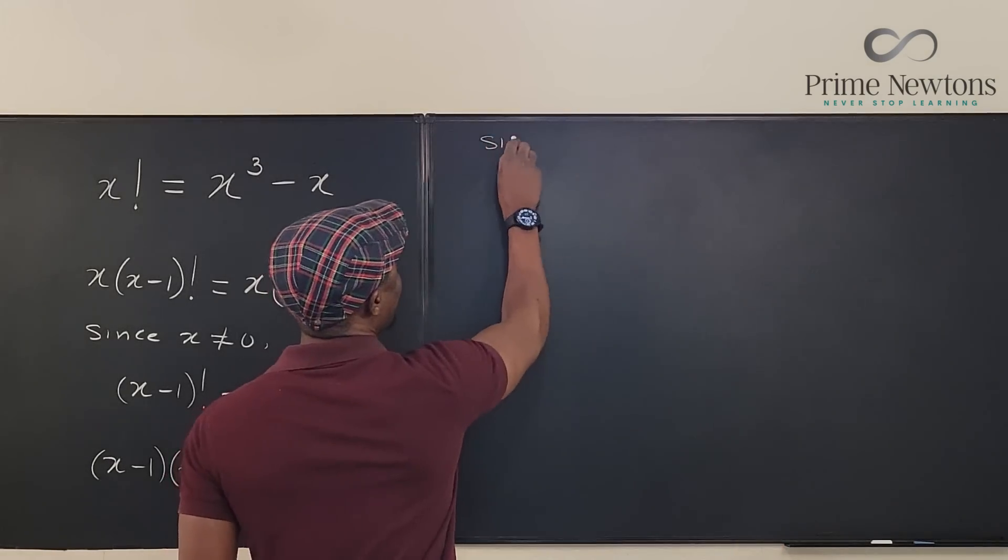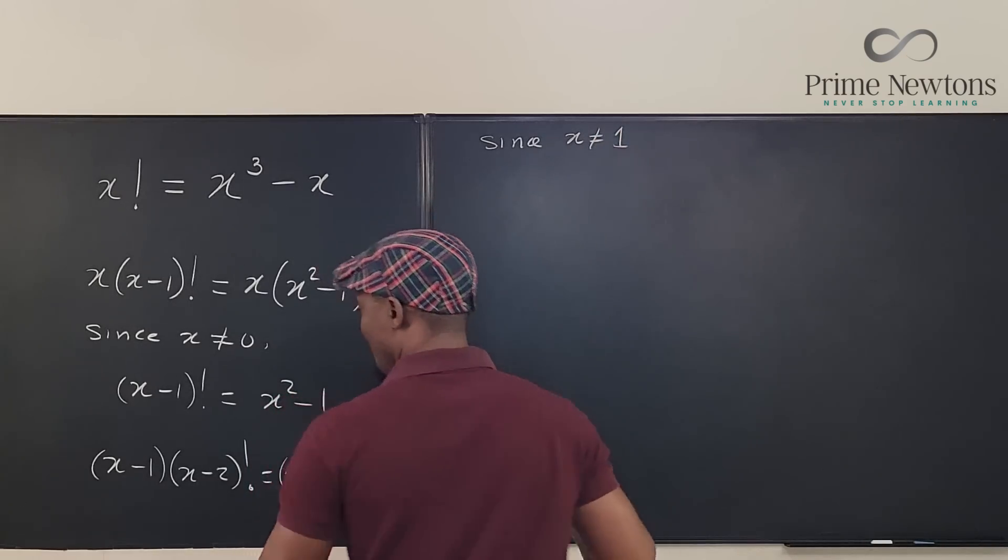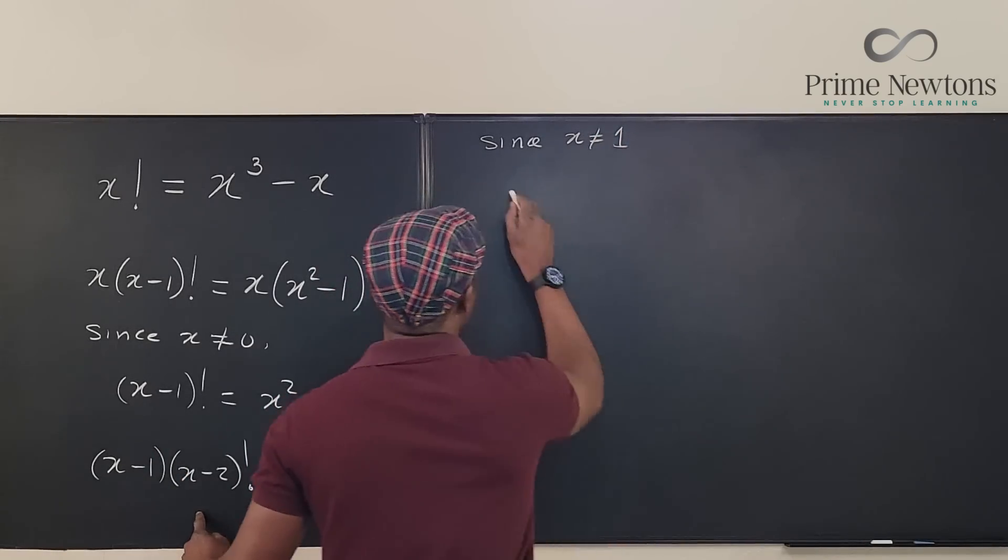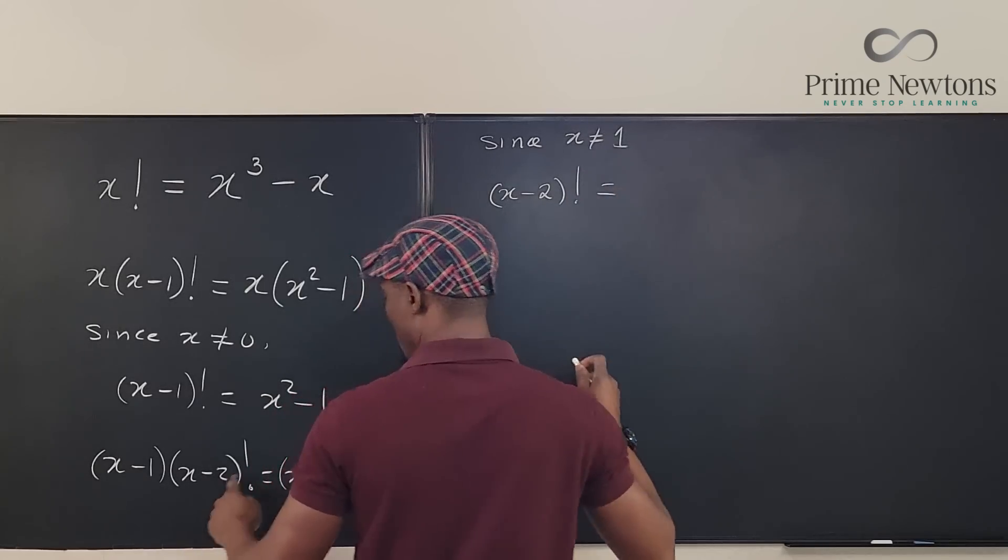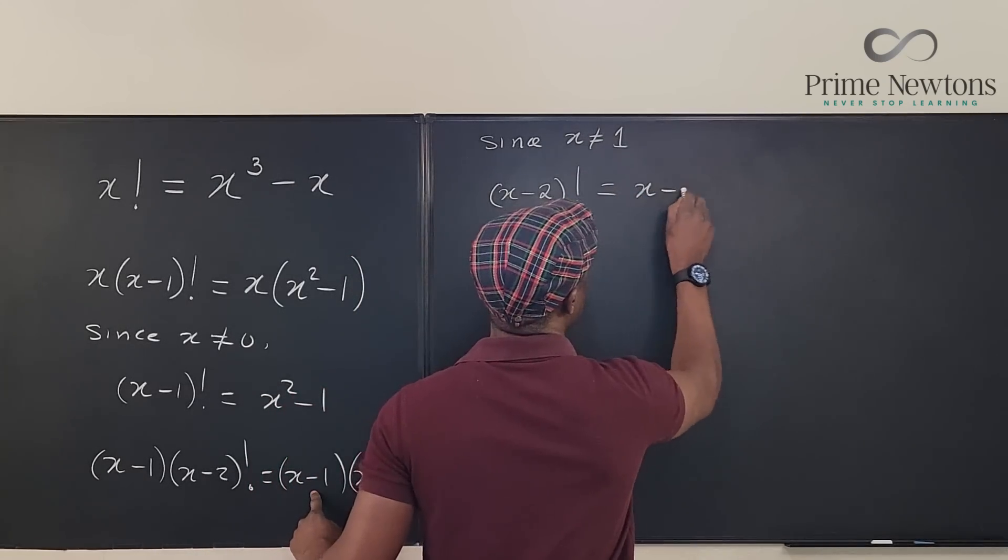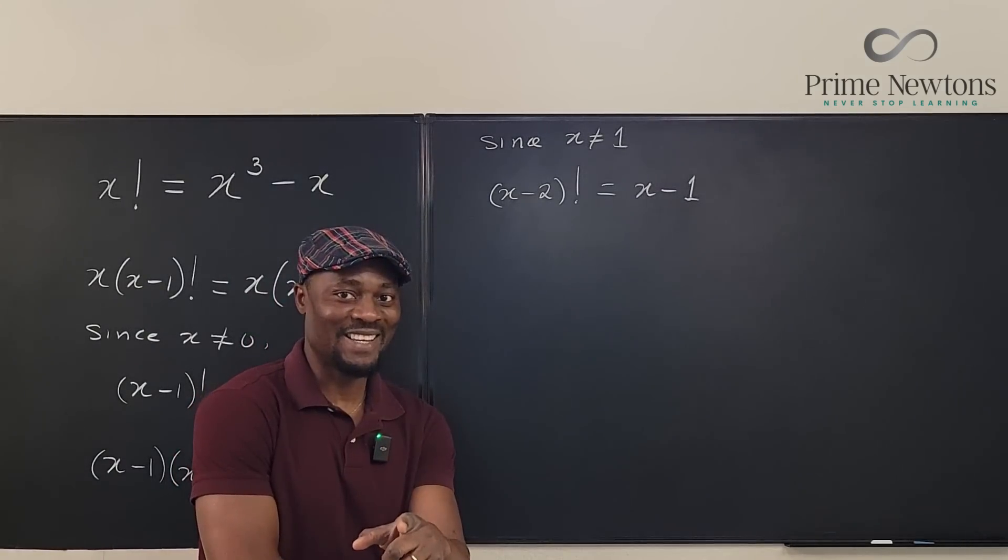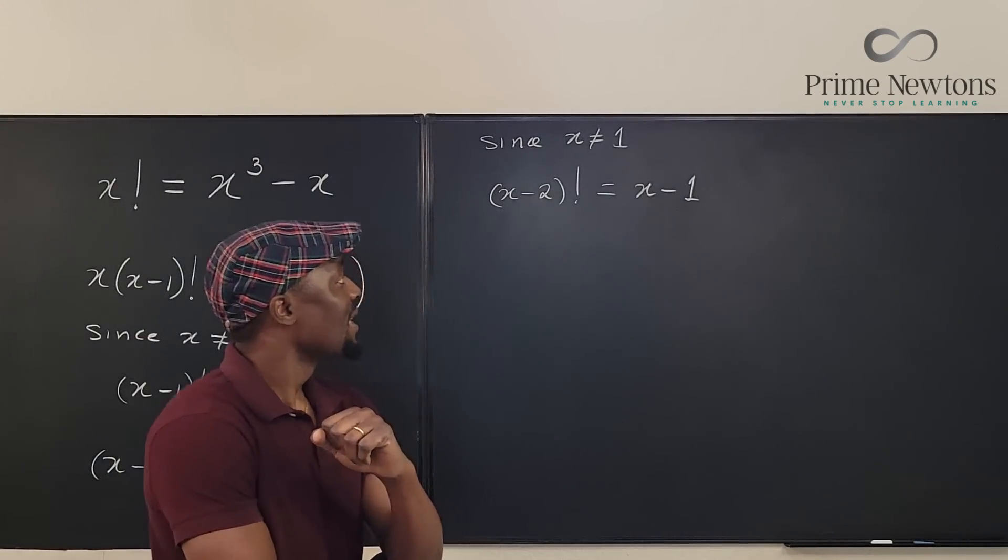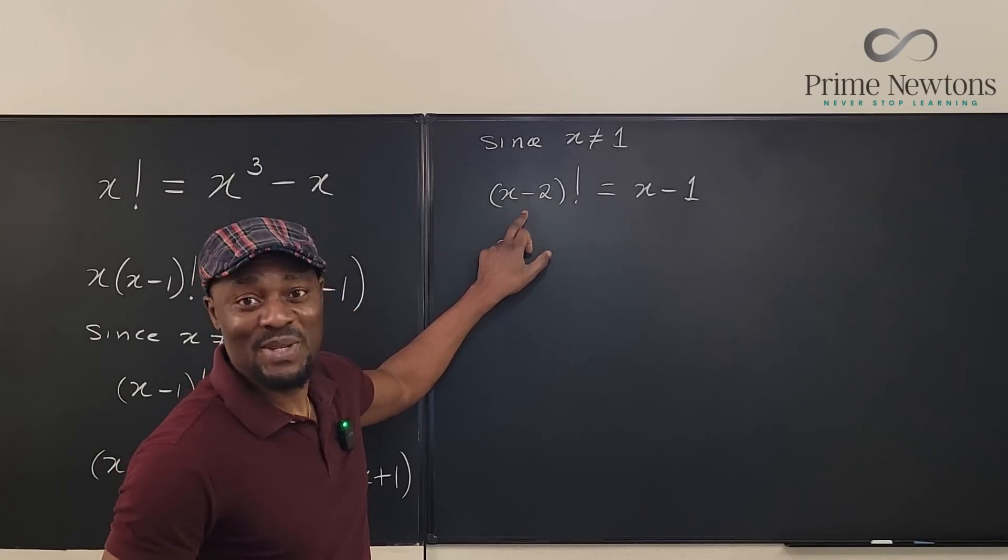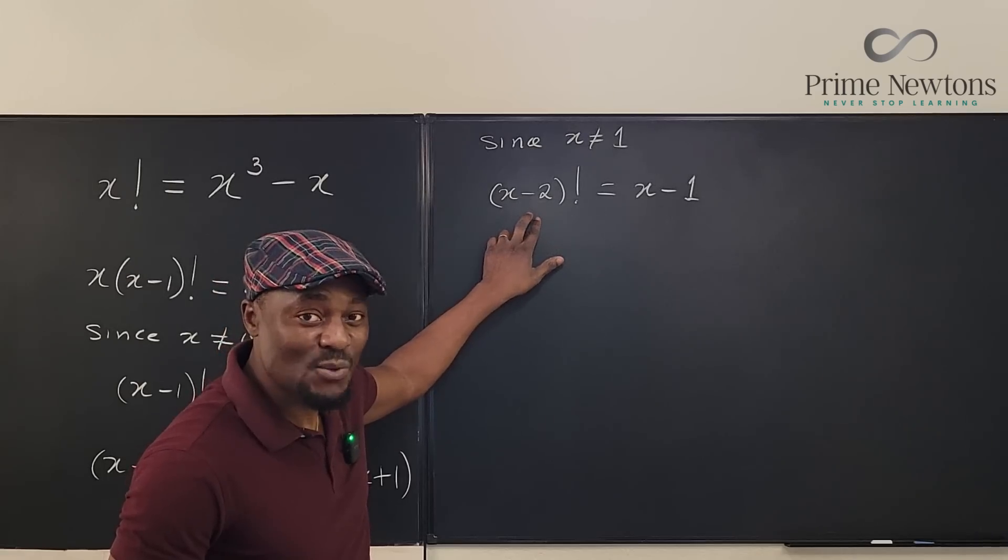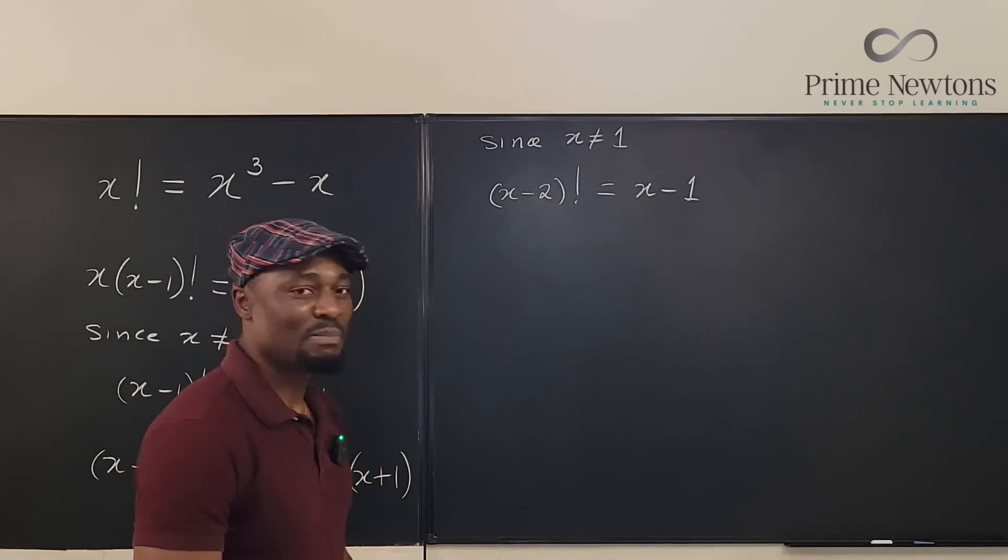We go on again. We can say since x is not equal to one, then I can divide both sides by this. I have (x-2) factorial is equal to (x+1). And this is looking juicy. So this is a bit complicated because I don't really know what to do with this. So I'm going to replace this (x-2) with something. So I'm just going to replace it with n.